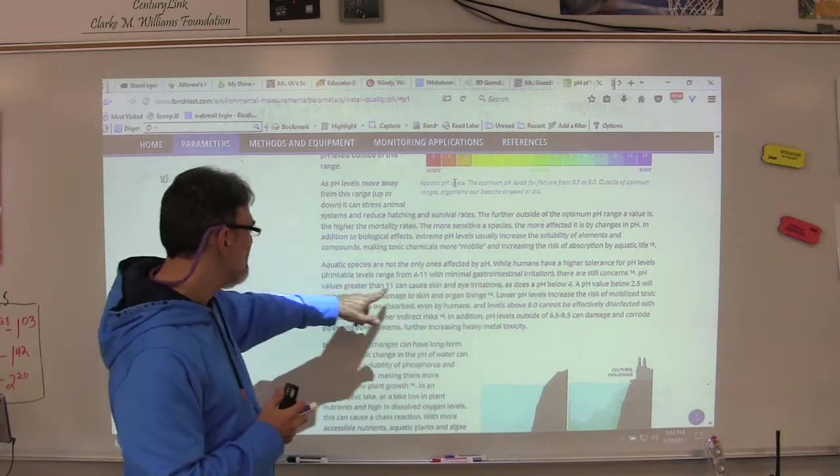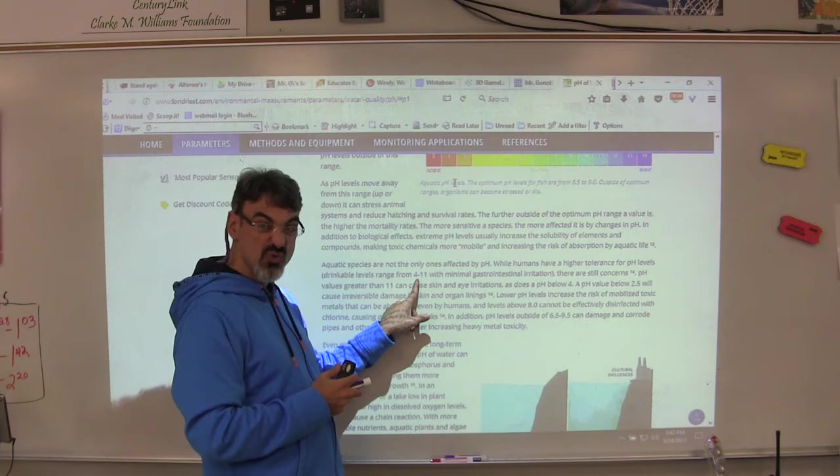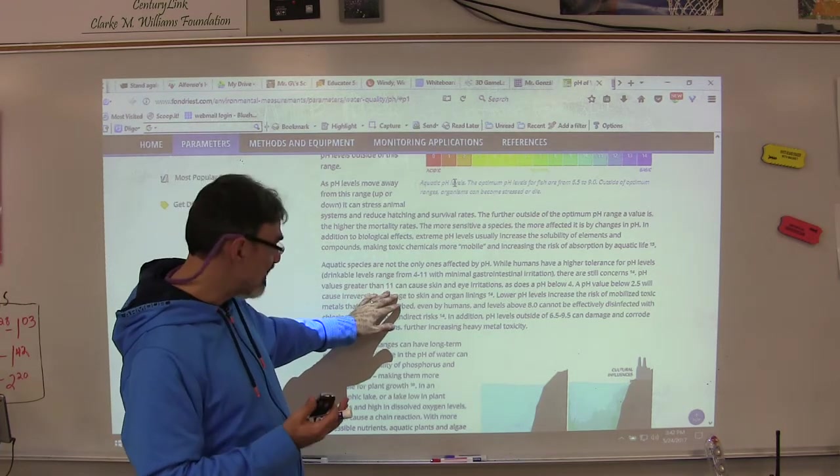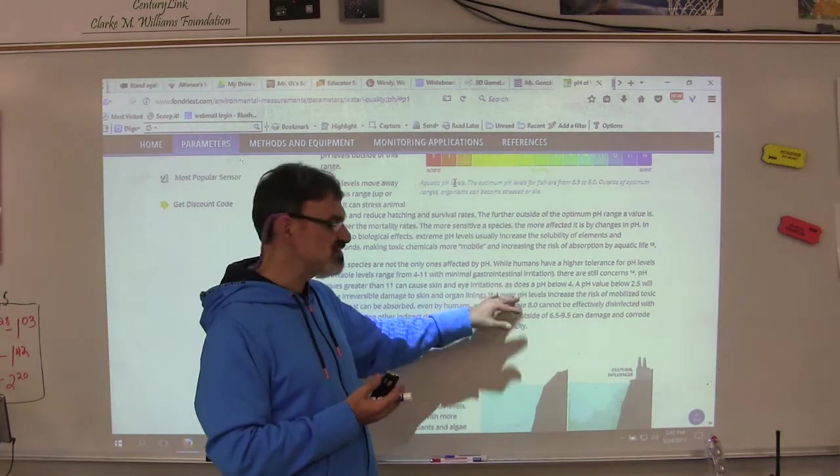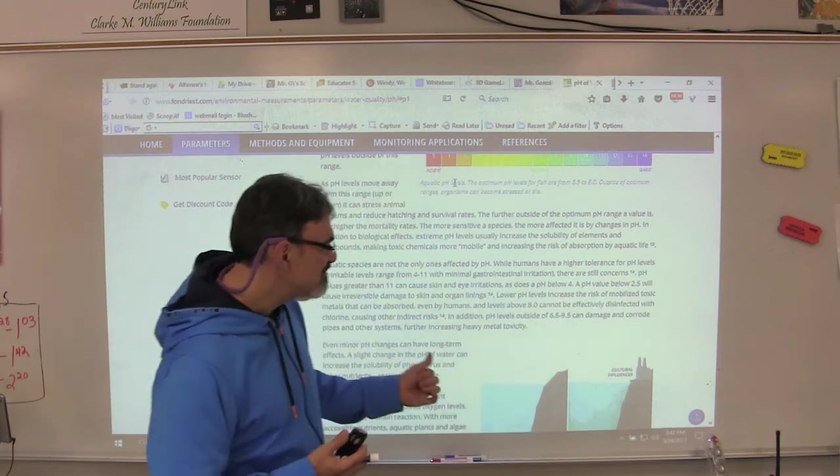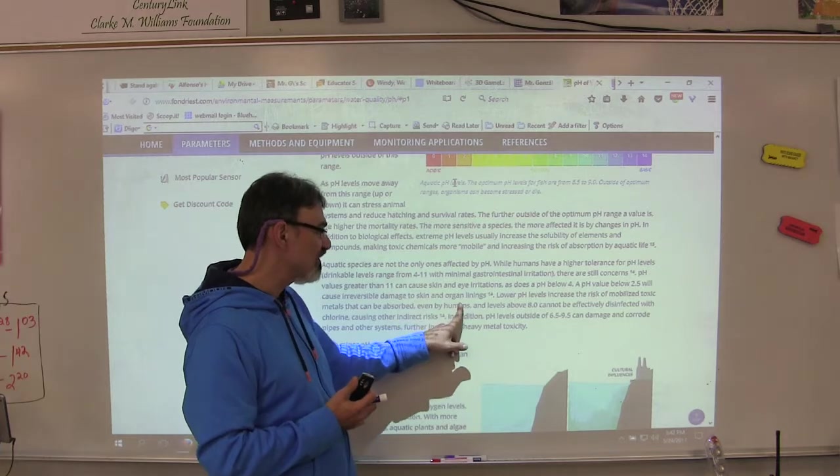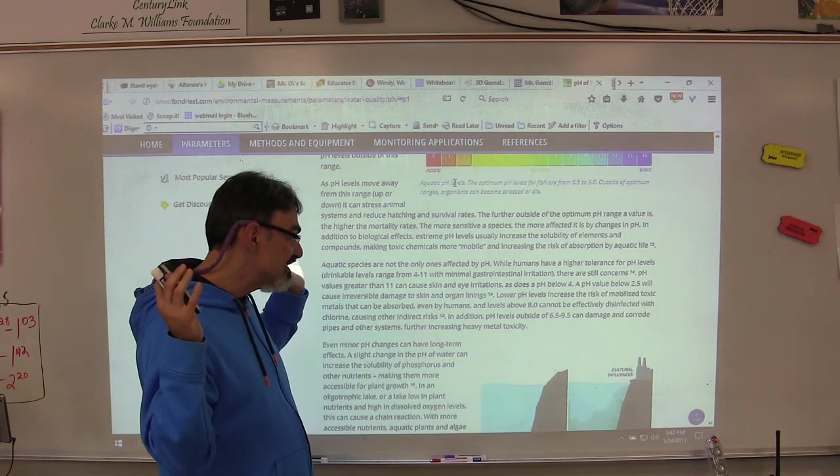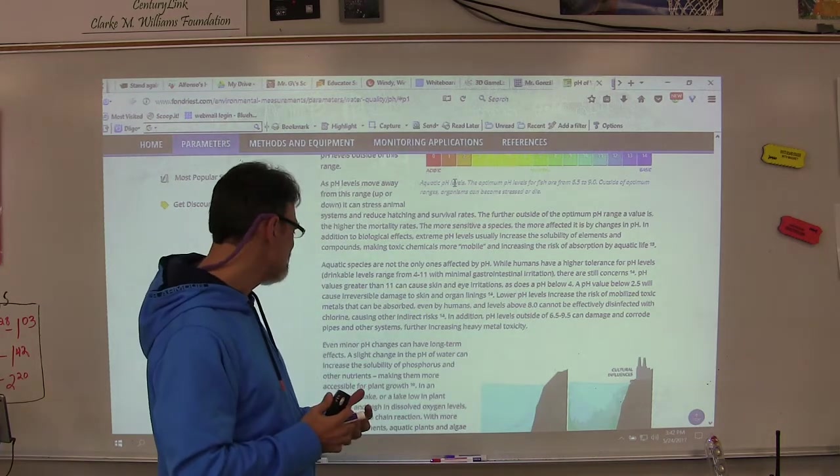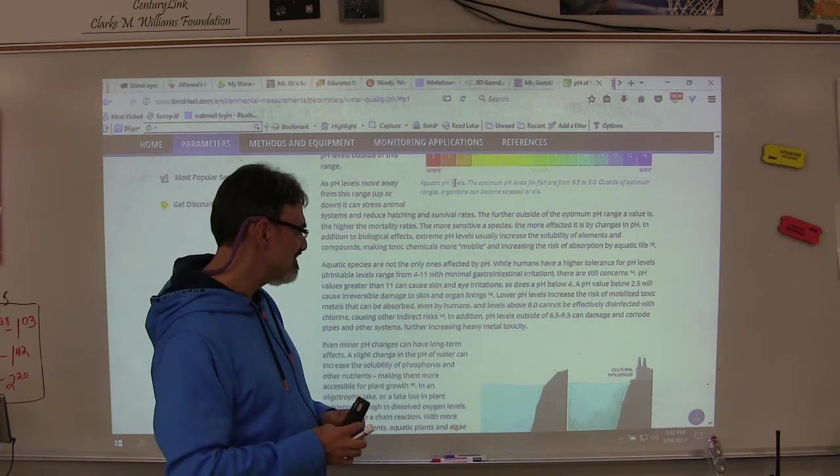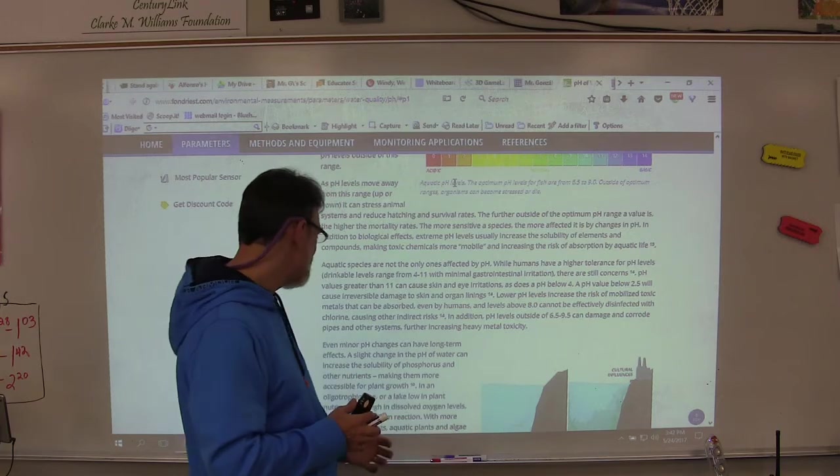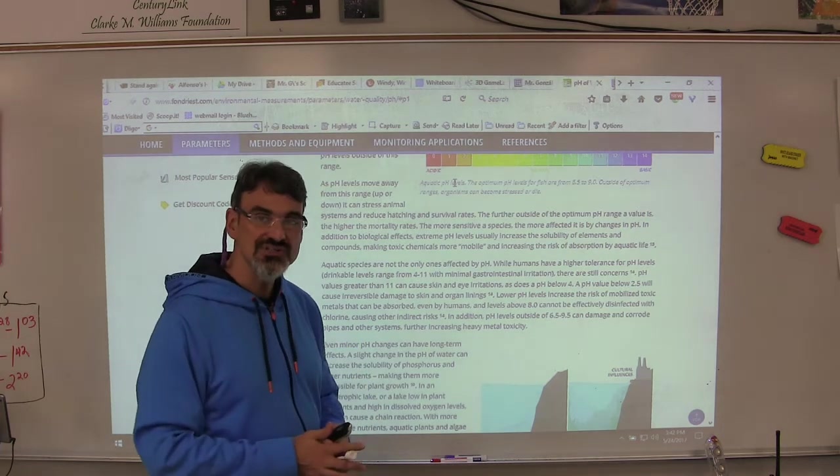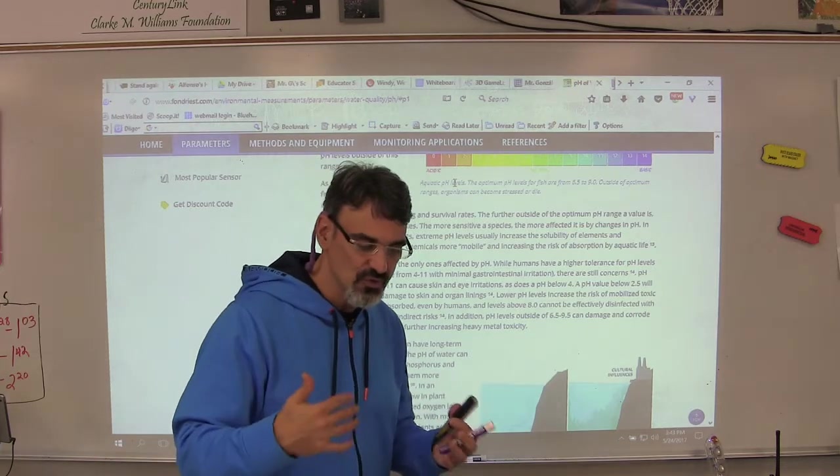It says while humans have a higher tolerance for pH levels, drinkable levels range from 4 to 11 with minimal gastrointestinal irritation. There are still concerns. pH values greater than 11 for us can cause skin and eye irritation. So this part tells you how it affects humans, as does a pH below 4. A pH value below 2.5 will cause irreversible damage to skin and organ linings. Lower pH levels increase the risk of mobilized toxic metals that can be absorbed even by humans. And levels above 8.0 cannot be effectively disinfected with chlorine, causing other indirect risks. In addition, pH levels outside of 6.5 to 9.5 can damage and corrode pipes - not just us, but our pipes where we get our drinking water and other systems, which can put heavy metal into our drinking water or maybe even our food.